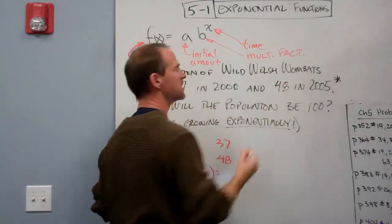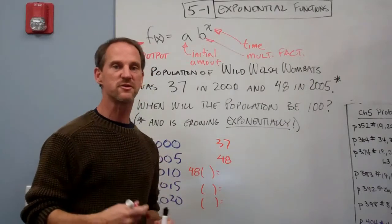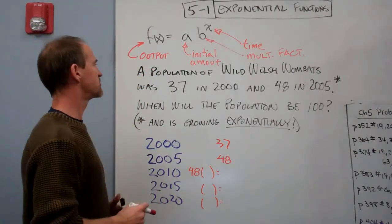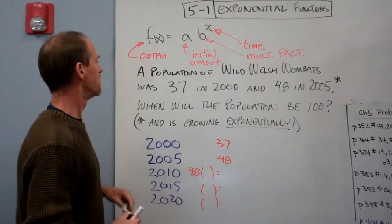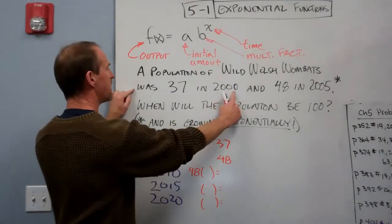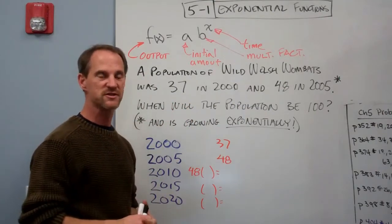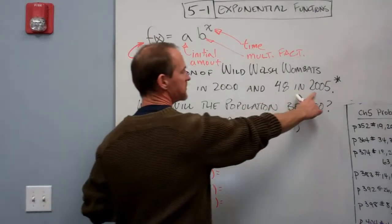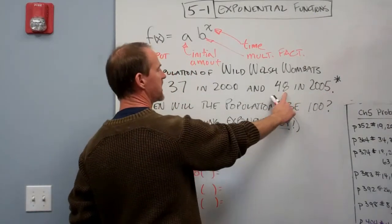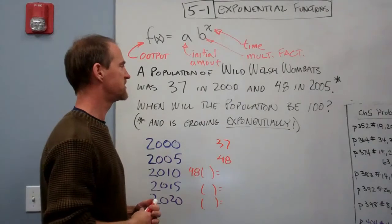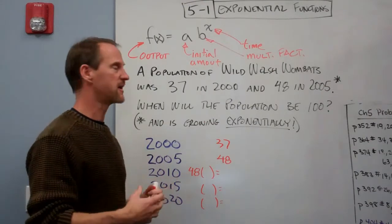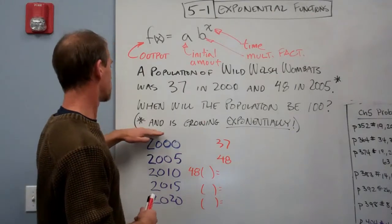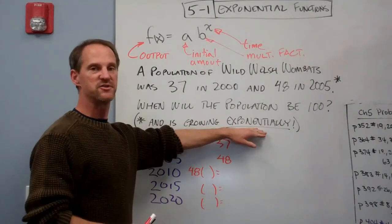And that is going to be found usually with a couple of data points, or it will be given to you. In this case, we're going to consider an endangered species, the wild Welsh wombat. We're going to assume that in the year 2000, there were 37 of those little critters, and they're endangered, so they're being protected. And by 2005, there are 48. Now, we're going to make the assumption that populations tend to grow by multiplying by a consistent percentage increase, so we're going to say that is our exponential growth.